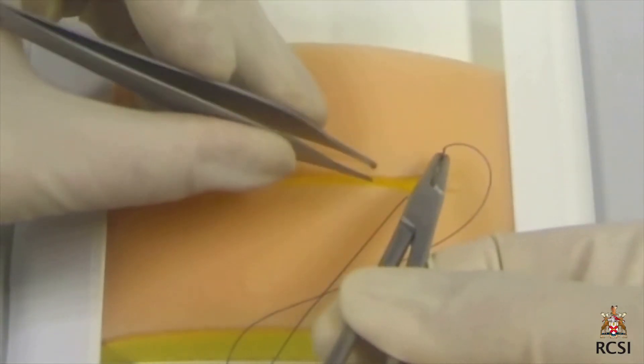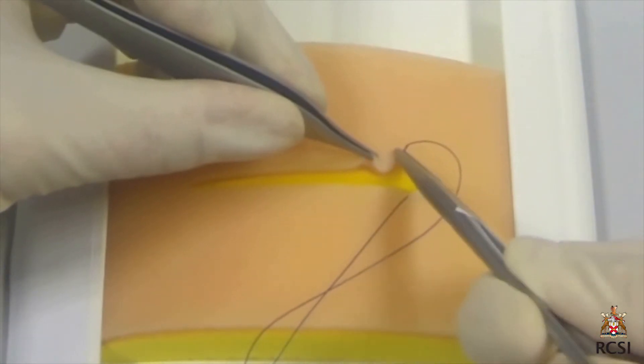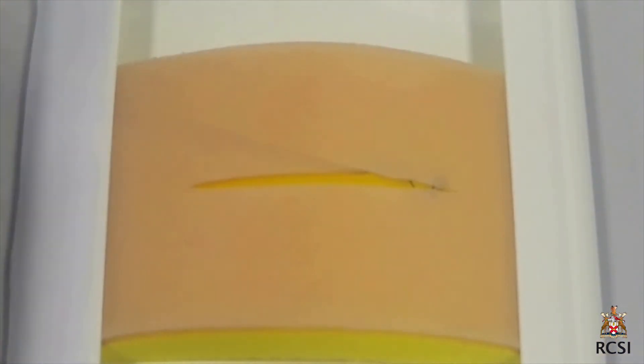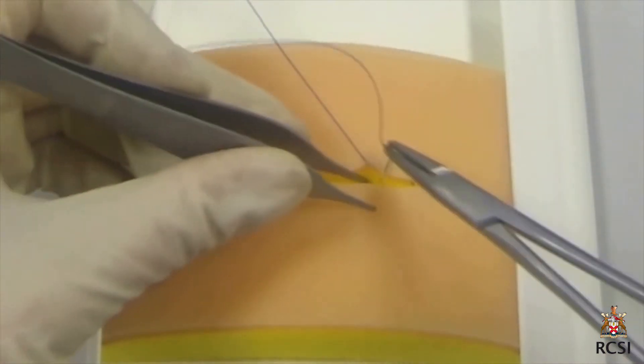This video demonstrates how to do a subcuticular suture to close a wound. This suture is used when the tension is minimum in the wound and the subcutaneous dead space is eliminated.